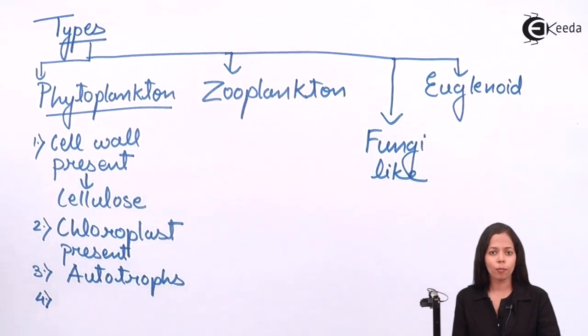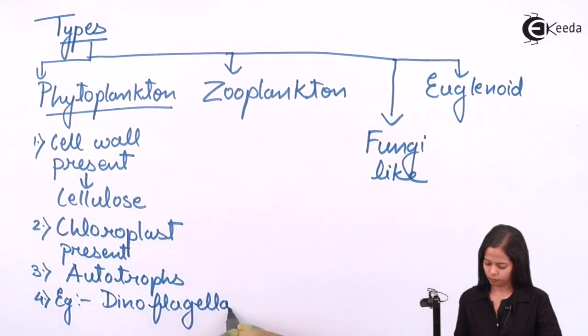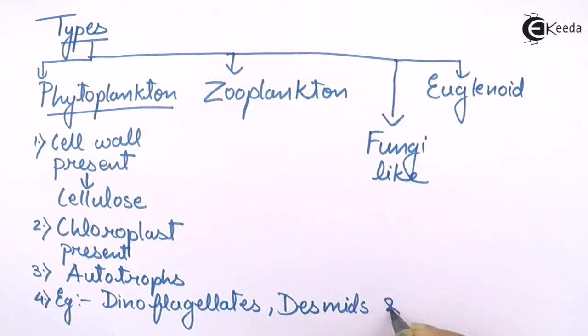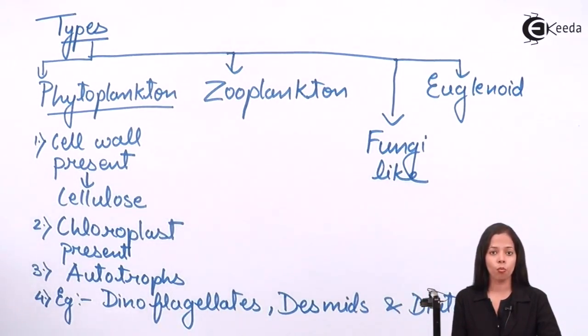Are they motile or non-motile? They are non-motile. Non-motile means cannot move from one place to another place. Examples of phytoplanktons are dinoflagellates, desmids, and diatoms. They are mostly found in marine water.